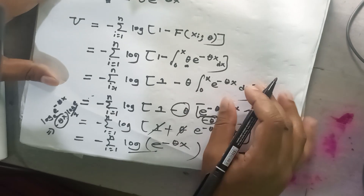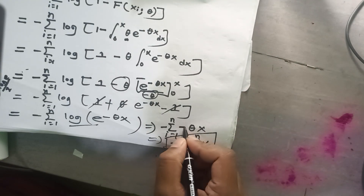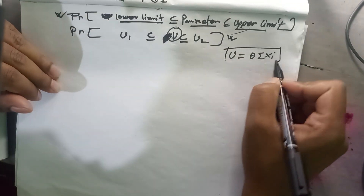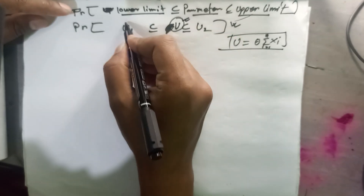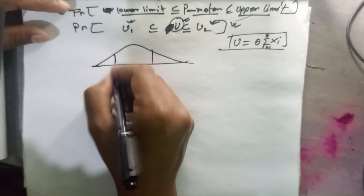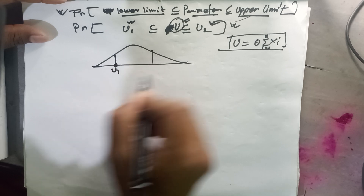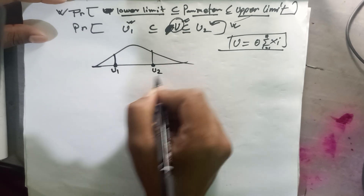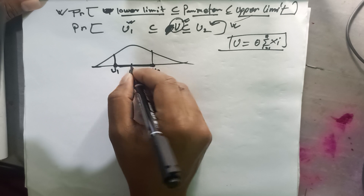There is a small sign correction: there is a minus times minus theta x, so those negatives cancel and we get U equals theta times the sum from i equals 1 to n of x_i. Now, visually, suppose this is the probability distribution. The lower tail ends at point u1, and the upper tail begins at u2. The interval between u1 and u2 is our desired confidence interval, where the parameter of interest lies.